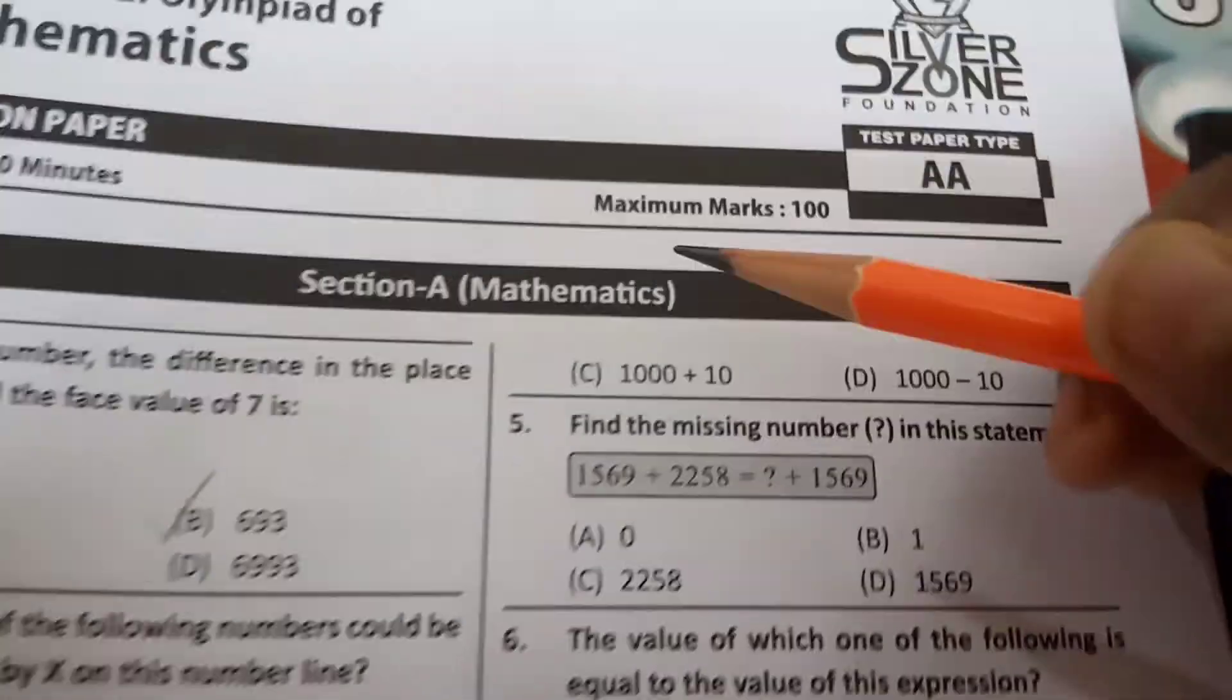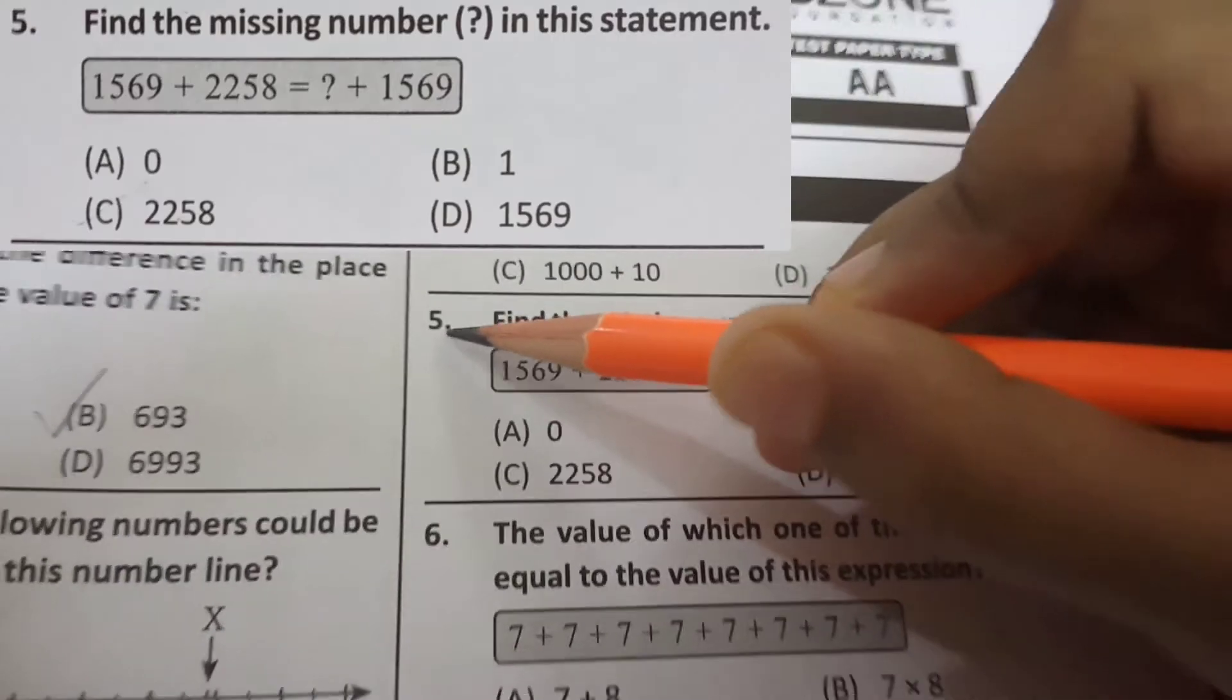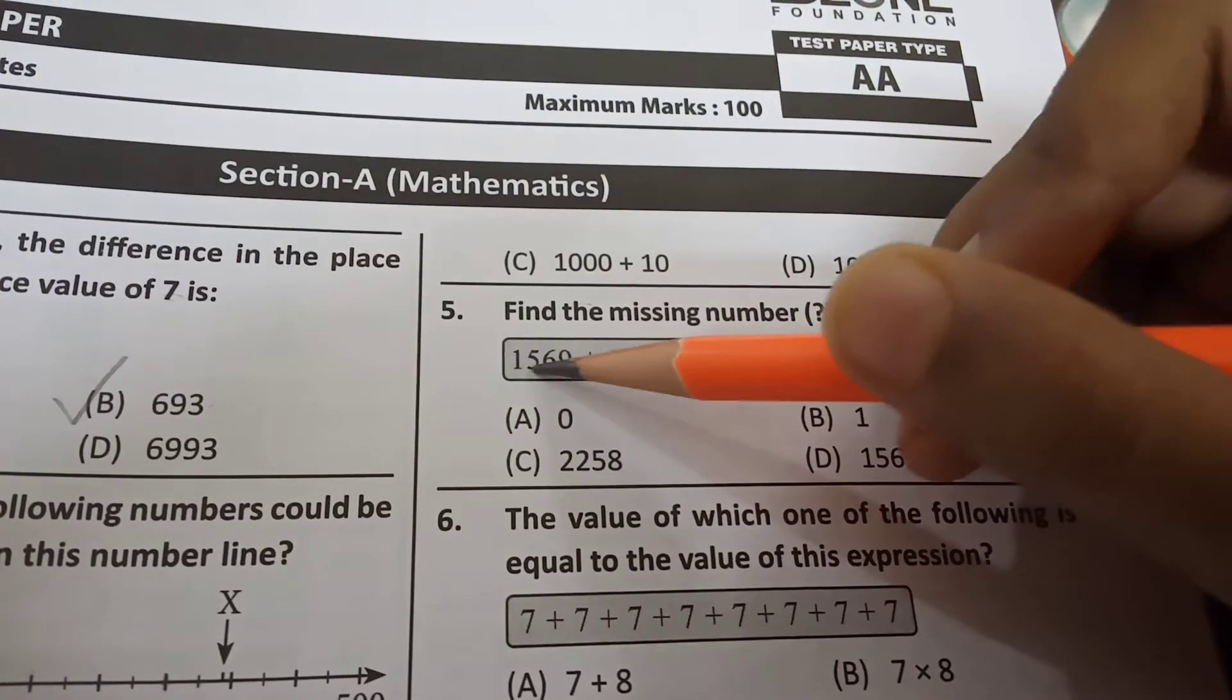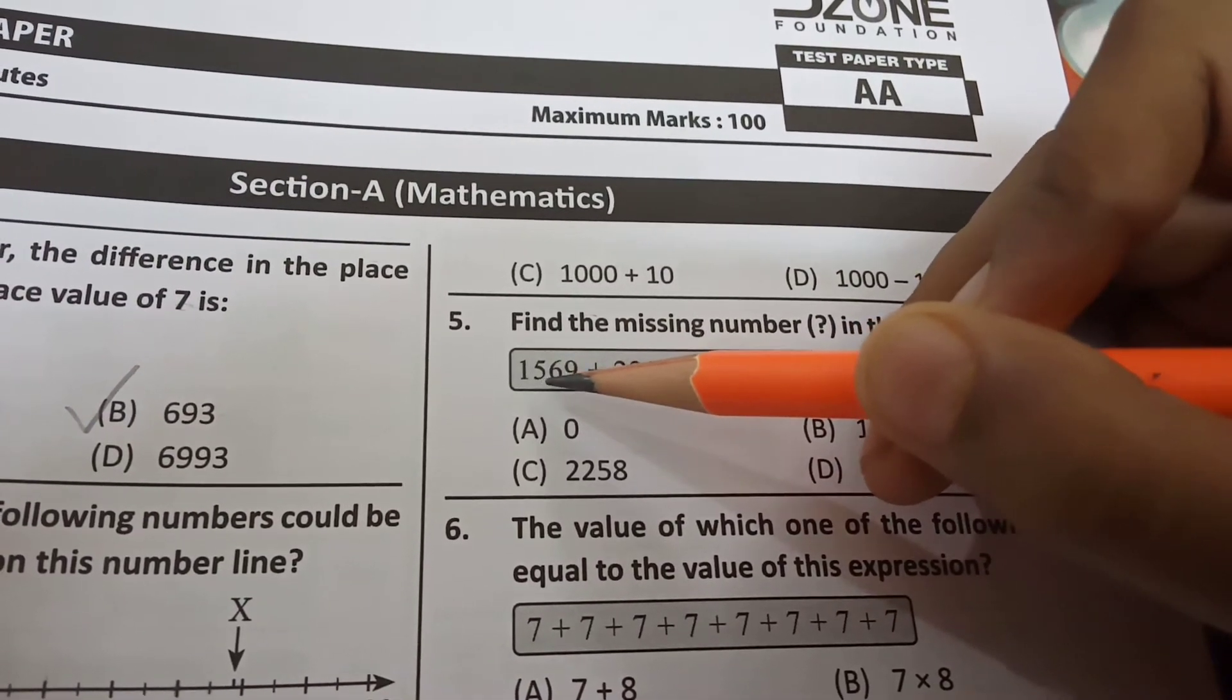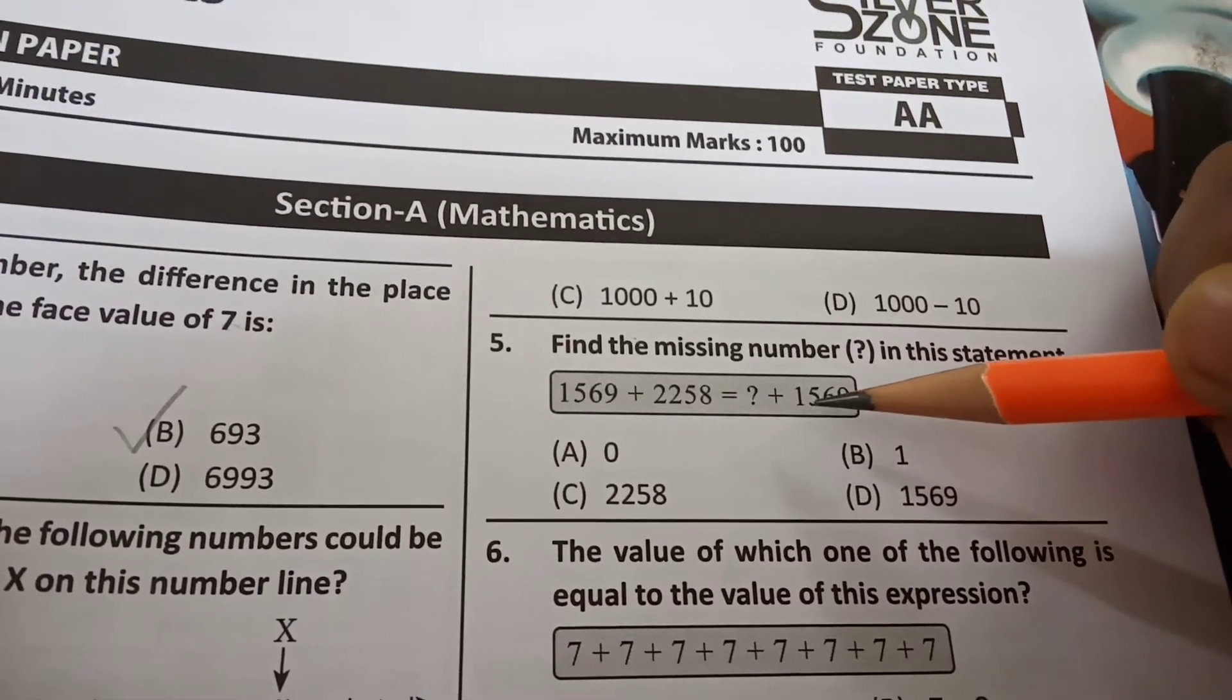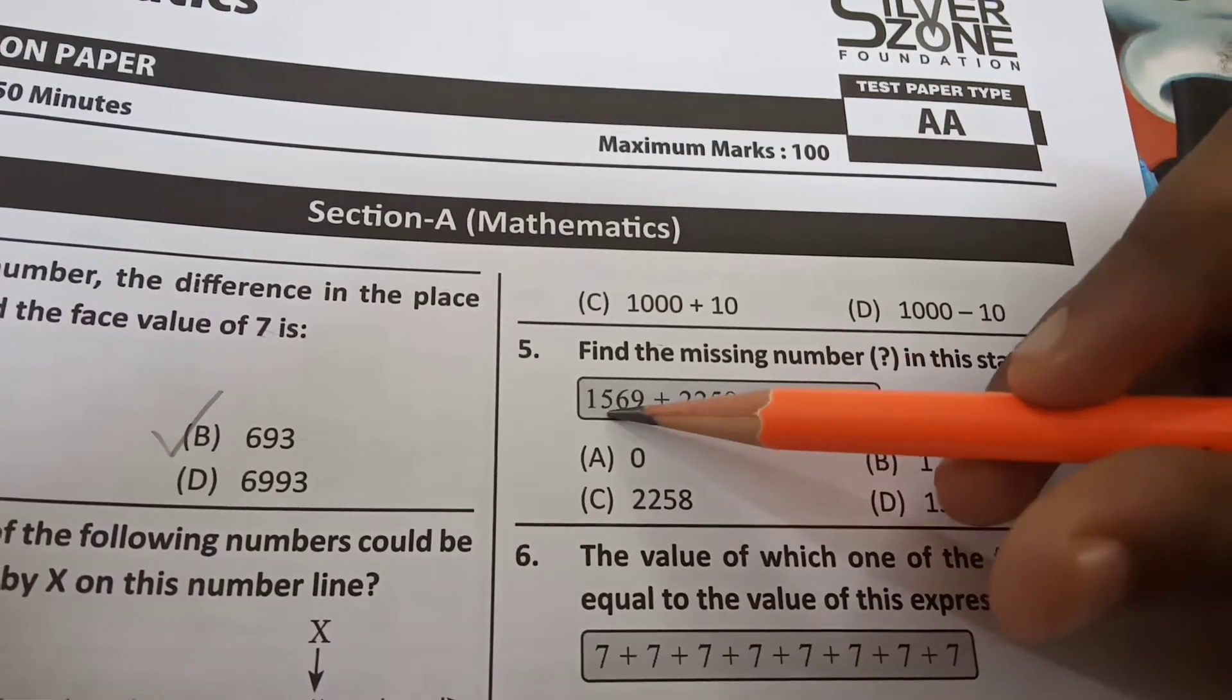Next question. These aren't correct. So next question 5. Find the missing number in this statement. So here it is showing this plus this equals what plus this. So here it is showing 1569 plus 2258 equals dash plus 1569. Here this will be this. This plus this equals this plus this.